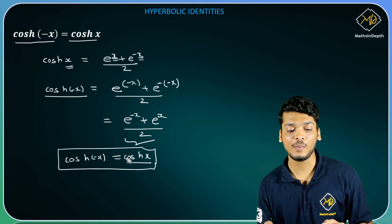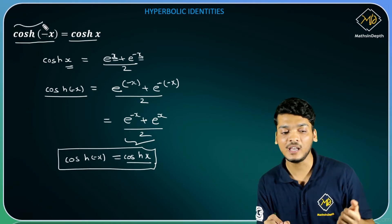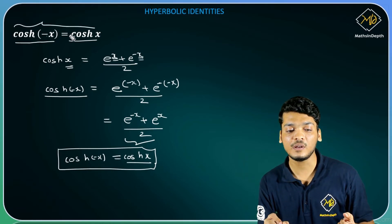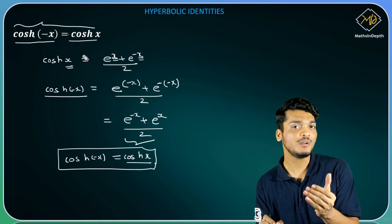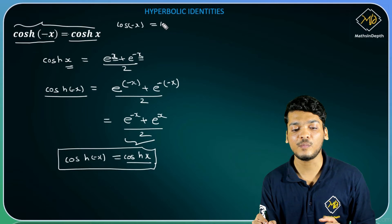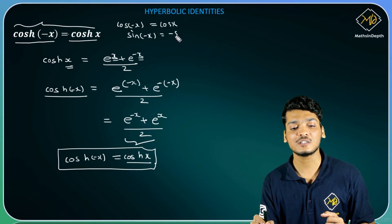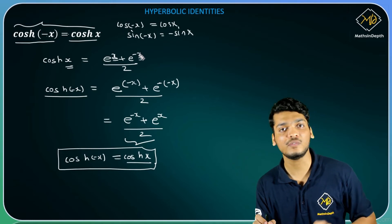So hence cosh(-x) is equal to cosh(x). Yahan par aap note kijiyega, sinh(-x) mein minus bahar aa jaata hai aur cosh ki formula mein minus bahar nahin aata. Yahi same relation trigonometry mein exist karta hai — cos(-x) = cos(x) aur sin(-x) = -sin(x). Similar relation hyperbolic functions mein bhi hai.